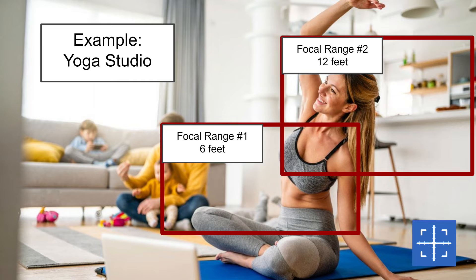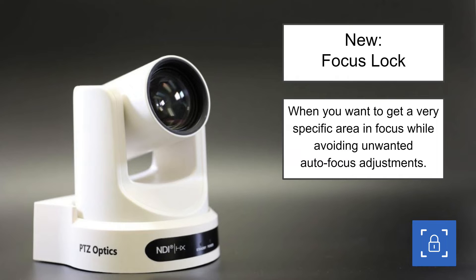Here's an example: the first range is 6 feet, the second is 12 feet. Say you're doing yoga and you're in between that space, but in the background there are kids and other people you don't want the camera focusing on. The focal range is a great way to handle that.